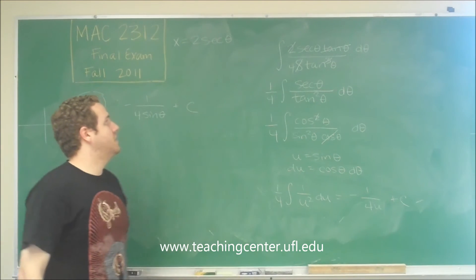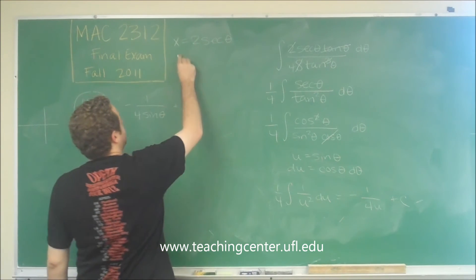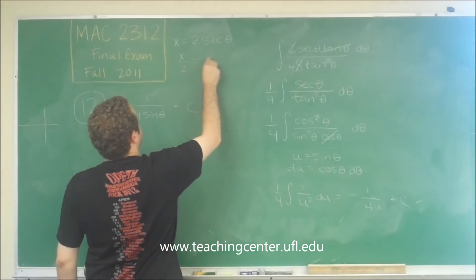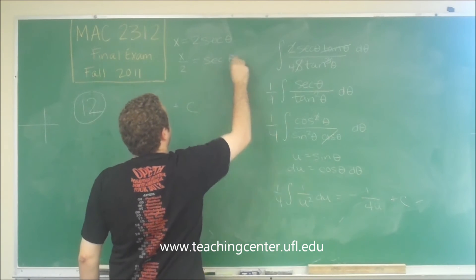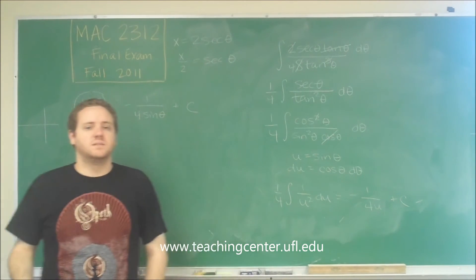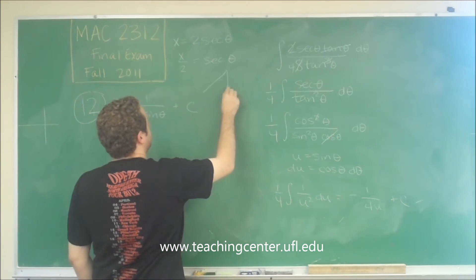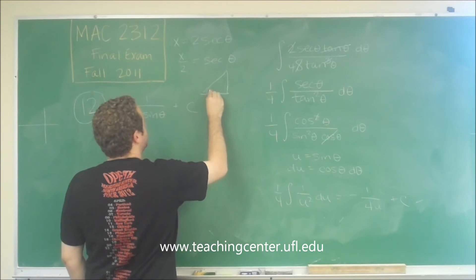We know we have this substitution up here, x equals 2 secant theta. Let's change that to x over 2 equals secant theta. And remember that when you have these trig substitutions, the best way to do this is to set up a right triangle. So we're going to set up a right triangle. Let's call this angle theta.